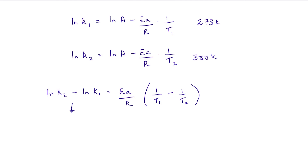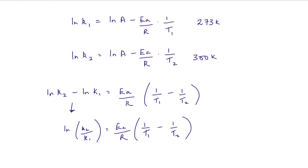We can simplify this because the difference of natural logarithms gives us ln(K2/K1) equals activation energy over the gas constant, times (1 over T1 minus 1 over T2). You wouldn't be expected to derive this equation yourself, but you might be asked to use it and comment on your result. Let's look at a practice question.